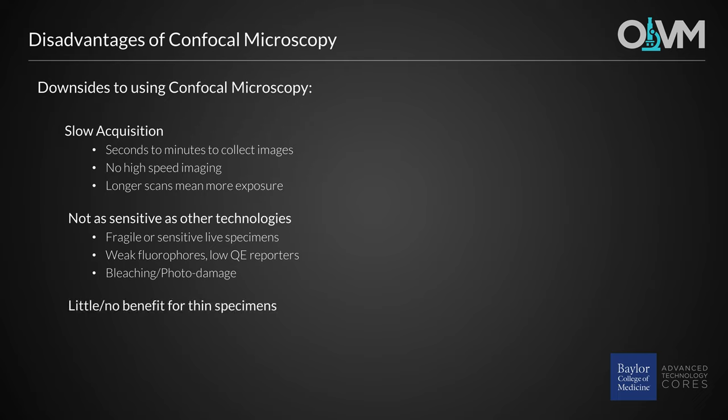Finally, thin specimens such as ultra-thin cryosections less than 10 microns thick, or specimens such as tissue culture cells will show little improvement in image quality with confocal microscopes compared to wide field, mainly because there really isn't that much out of focus signal to reject. Images collected of these types of specimens on wide field microscopes can be image processed to further improve contrast and resolution, such as with deconvolution software.